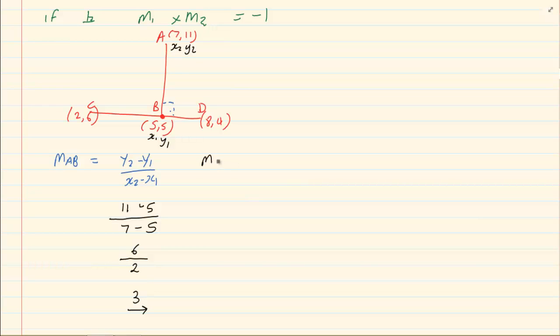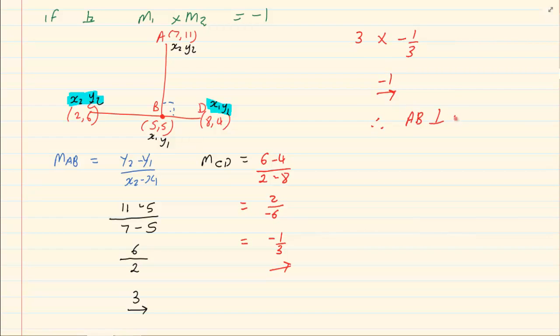Now, let us get M of CD. Again, you're going to mark your points. Remember, it doesn't matter which one you mark as 1 and 2 as long as 2 is together and 1 is together. So, we've got 6 minus 4 all over 2 minus 8 giving us 2 over negative 6 which is equal to negative 1 over 3. Now, how do we know if they are perpendicular? If I say 3 times minus 1 over 3, I get minus 1. Therefore, it is perpendicular. AB is perpendicular to CD.